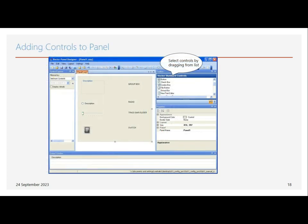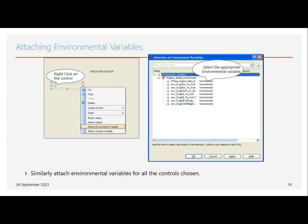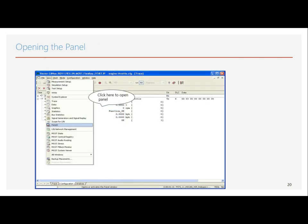In the panel, we have radio buttons whose properties we can configure — we can change the color and set the respective control and size. We can attach environmental variables to all controls chosen. When using control buttons, we can also attach environmental variables. To open the panel view, click on View > Open Panel.